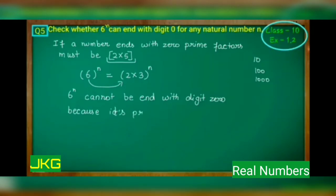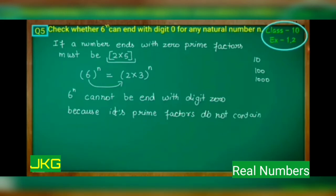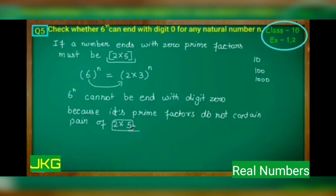6^n cannot end with digit 0 because its prime factors, that is 2 into 3, do not contain the pair of 2 into 5. We can have more pairs of 2 into 3 but one pair of 2 into 5 is necessary to have 0 as the unit digit. Therefore, it is not possible for any power of 6 to end with 0.